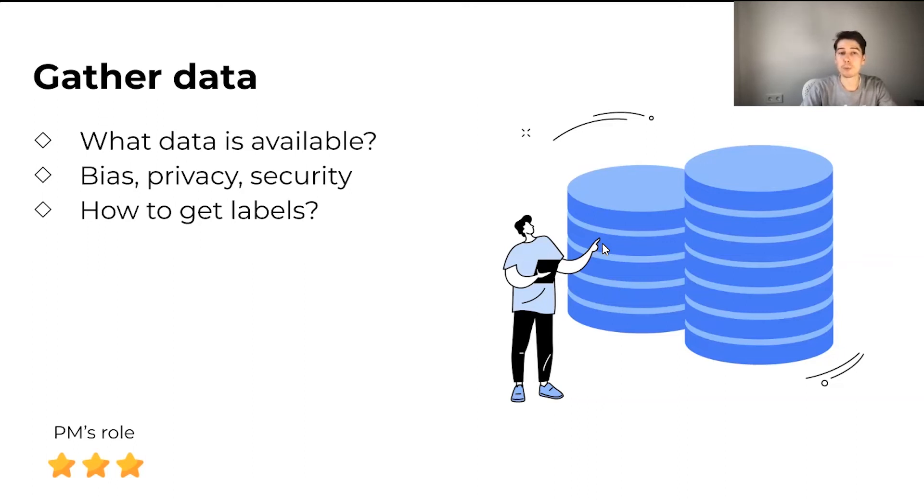Then the questions of bias, privacy, and security. I've already talked a little bit about privacy and security, but speaking about bias, there are different types of biases. In our example, we've trained our model on images of cats and dogs. But if we would show it an image of a raccoon, we're not really sure how it's going to behave. So you need to be really careful with this.